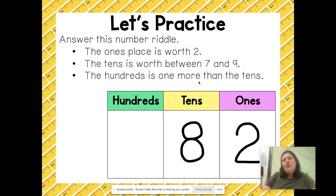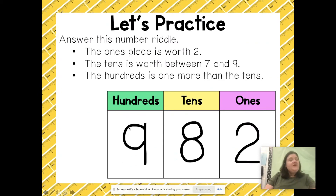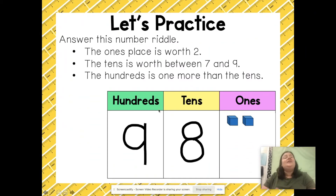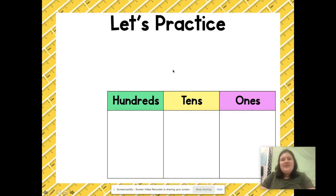My mystery number is 982. Now let's swap out our digits for place value blocks. To represent my two ones I need two ones pieces, and to represent my eight tens I need eight rods.